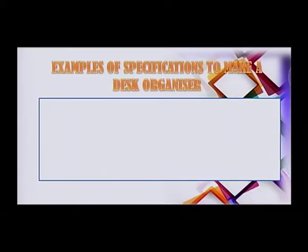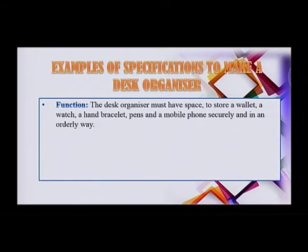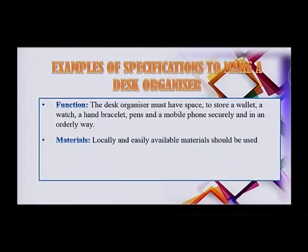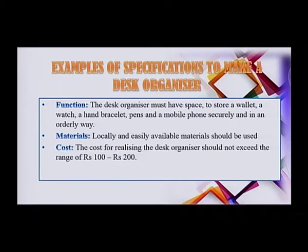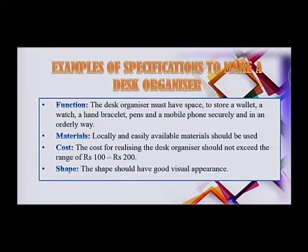Here are some examples of specifications for the desk organizer. Function: the desk organizer must have space to store a wallet, a watch, a hand bracelet, pants, and a mobile phone securely and in an orderly way. Materials: locally and easily available materials should be used. Cost: the cost should not exceed the range of 100 to 200 rupees. Shape: the shape should have good visual appearance.